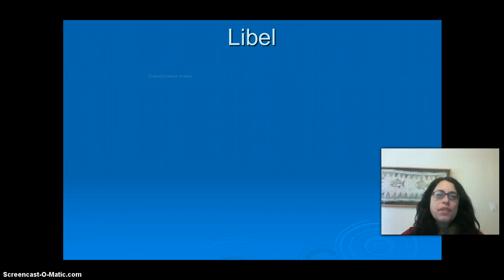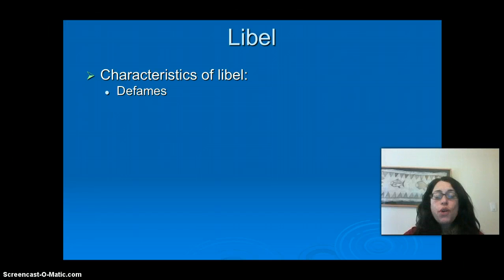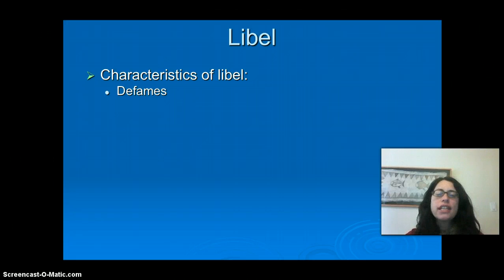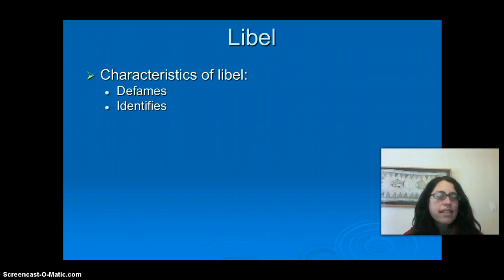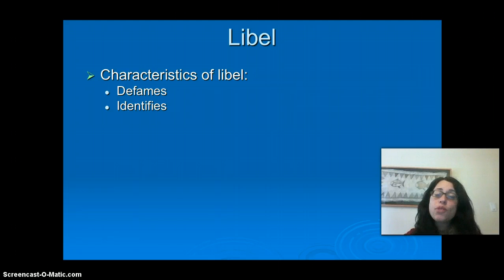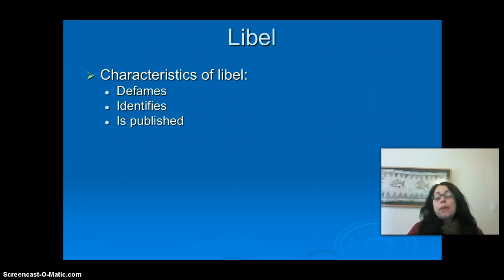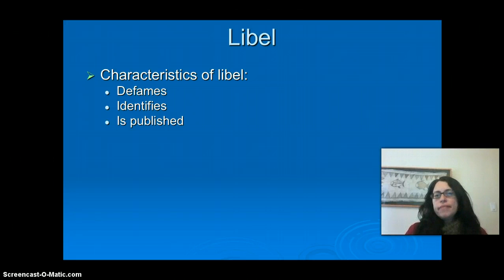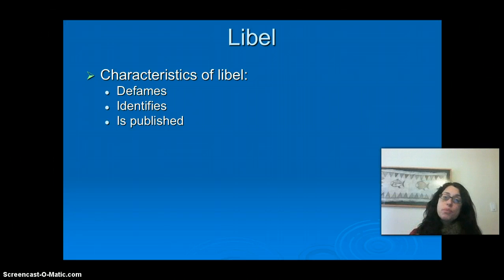So both of those types we're going to use the umbrella term libel for. When we're talking about libel, know that we're talking about both types of defaming speech or incidents. Here are the characteristics of it. First, what is being written, published, or broadcast defames someone — it ruins the reputation and injures them in that sort of way. Second, it identifies the person. Third, the work is published — that can mean published in a newspaper, broadcast on television, or whatever. Basically, now we have defamation that identifies a person and is published.